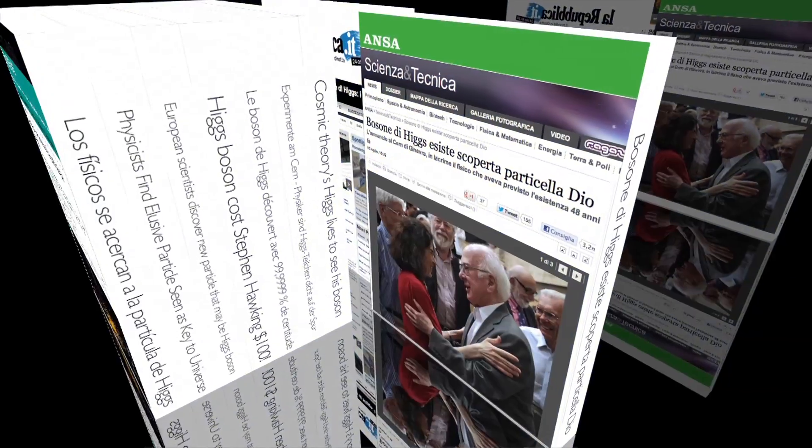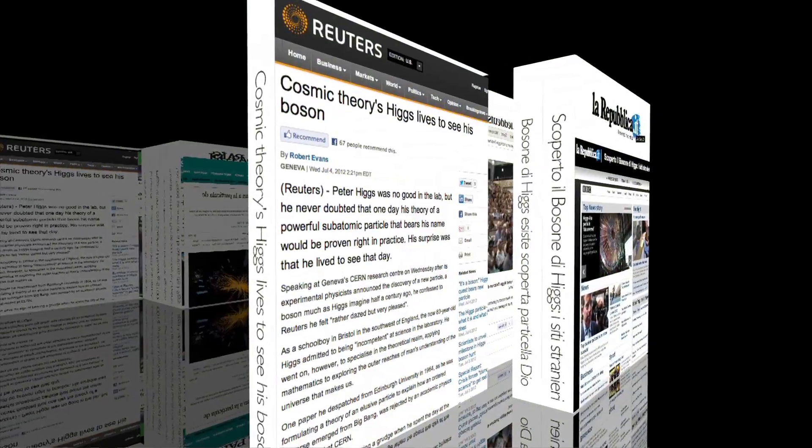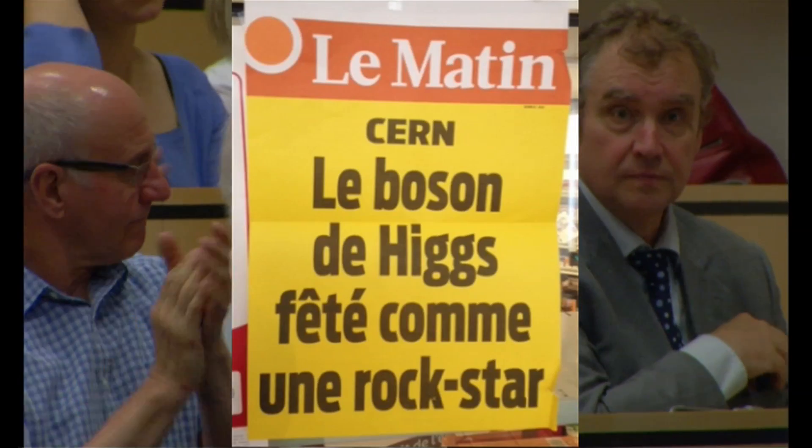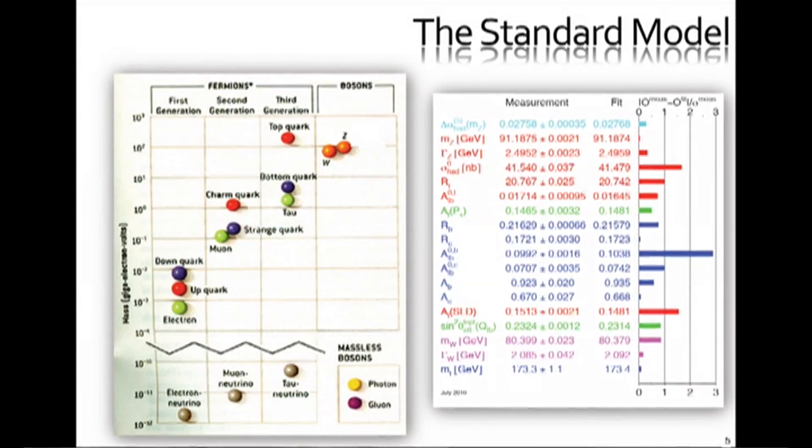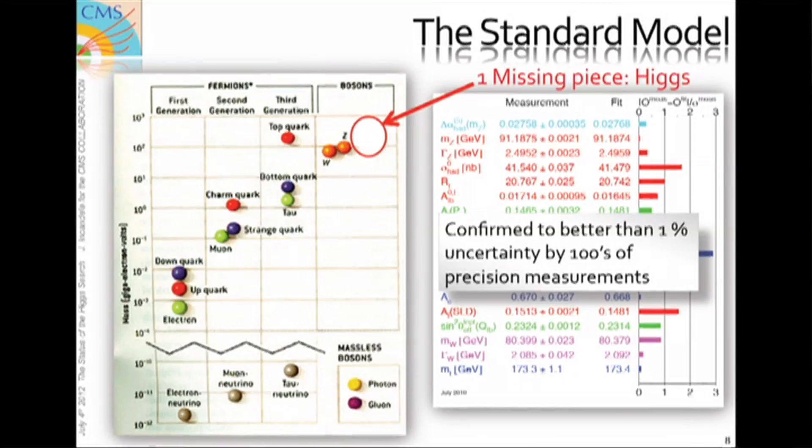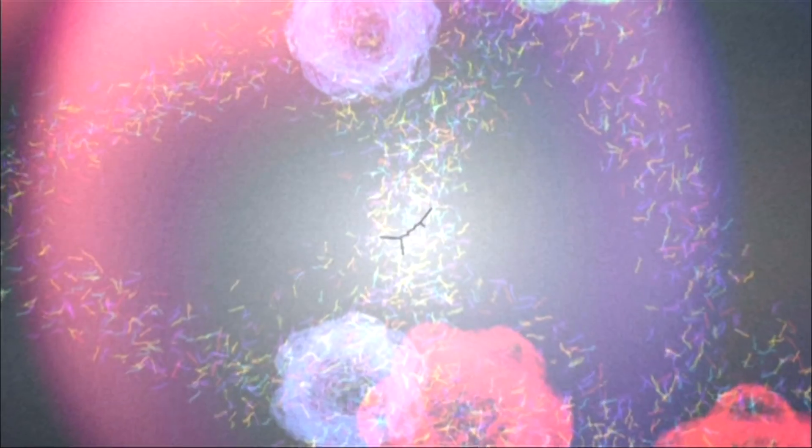When CERN announced on July 4th the discovery of a new particle, headlines around the world celebrated it as the long-sought-after Higgs boson, the missing piece of a puzzle describing fundamental particles and forces in the universe.